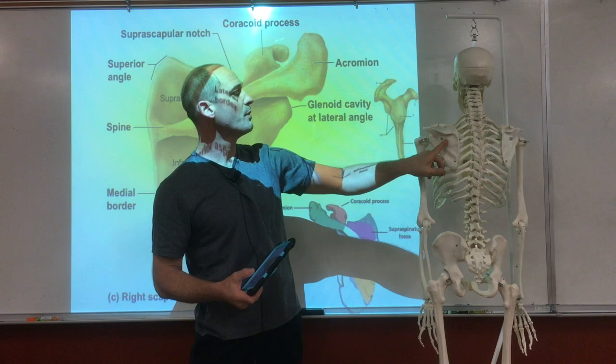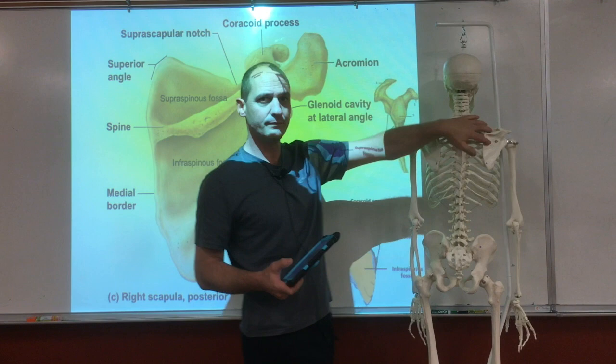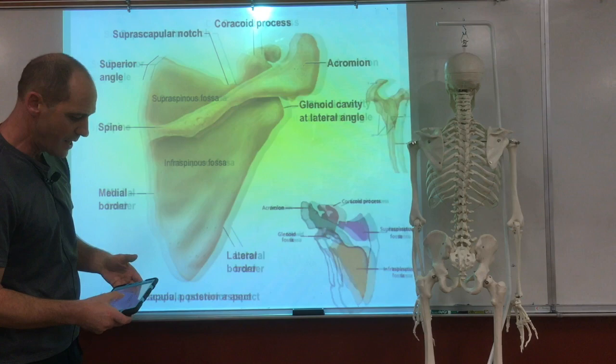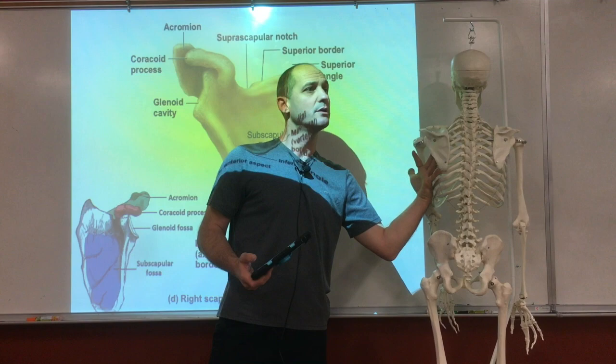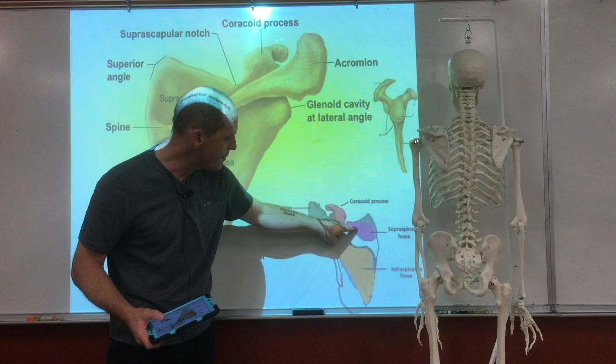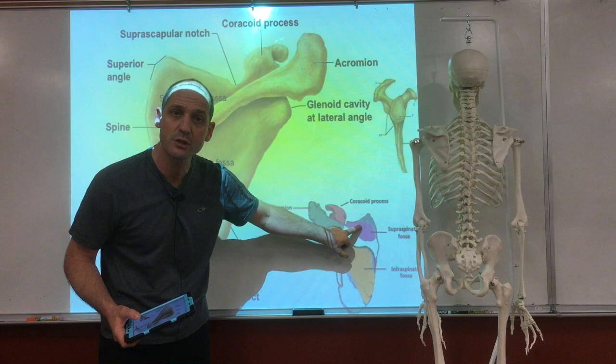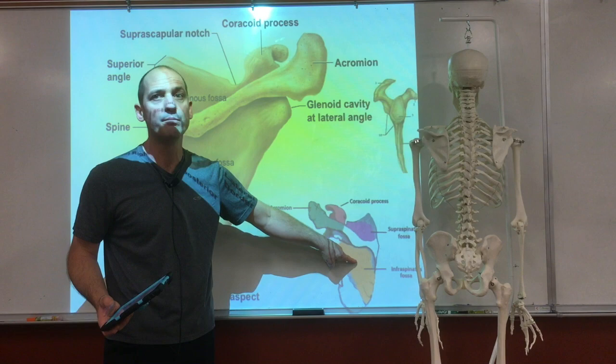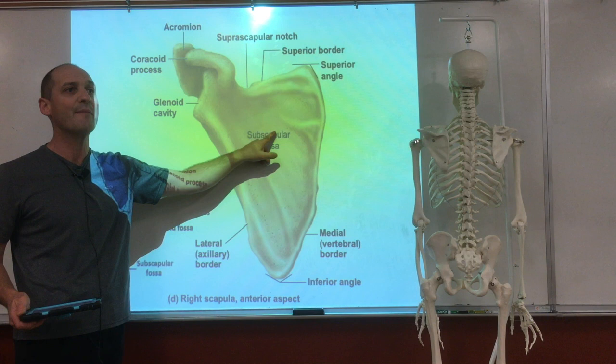The supraspinous fossa is above the spine of the scapula and the infraspinous fossa is below — this is the other side. Supra and infra. The subscapular fossa is underneath — it's the one that goes to the chest. So that's also a muscle attachment. These areas become muscle attachments for muscles called the supraspinatus and the infraspinatus. The muscles are named according to the bony part, which is helpful. And there is a muscle on the bottom called the subscapularis muscle.